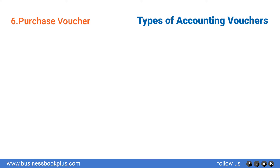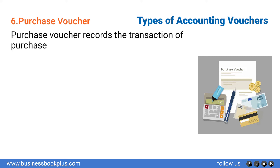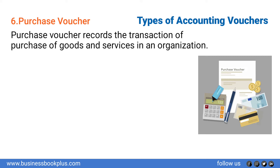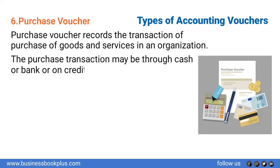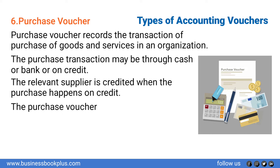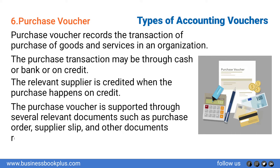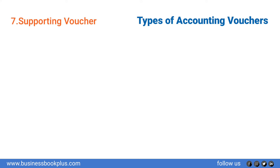Number six: Purchase Voucher. The purchase voucher records the transaction of purchase of goods and services in an organization. The purchase transaction may be through cash, bank, or on credit. The relevant supplier is credited when the purchase happens on credit. The purchase voucher is supported through several relevant documents such as a purchase order, supplier slip, and other documents relevant to the required purchase.